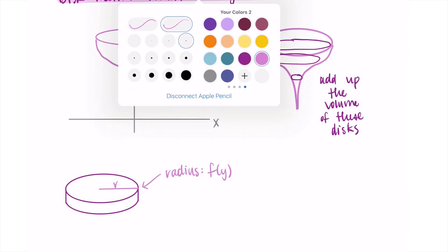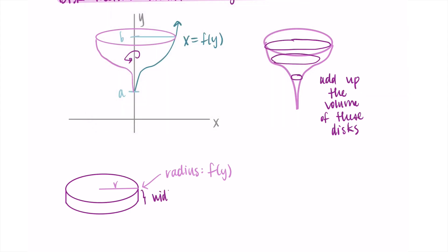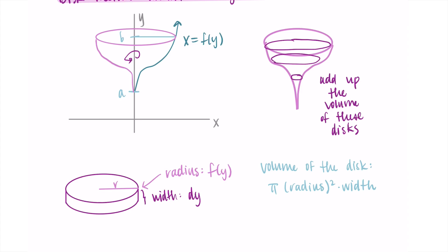Each of these little discs also has a width, and this time the width is dy. We're adding up all of these discs, and each one has this little dy width. When we go to find the volume of a disc, we do π times the radius squared — that's the area of the circle — and then multiply by the width dy to get that depth to the disc and make it a volume rather than just an area.